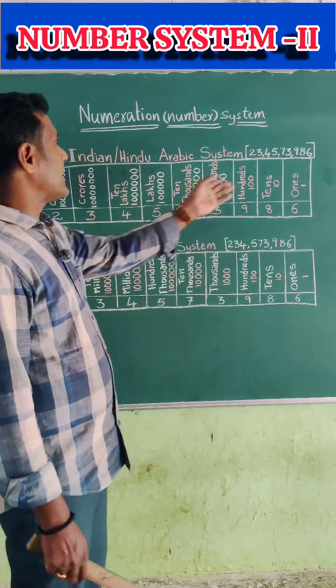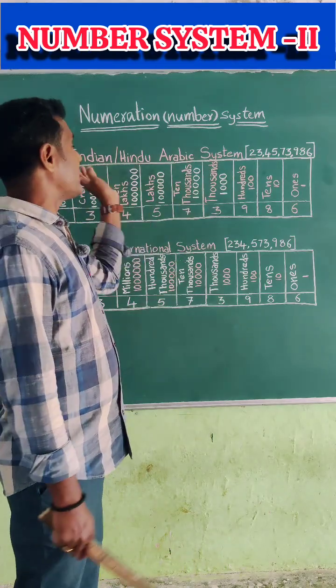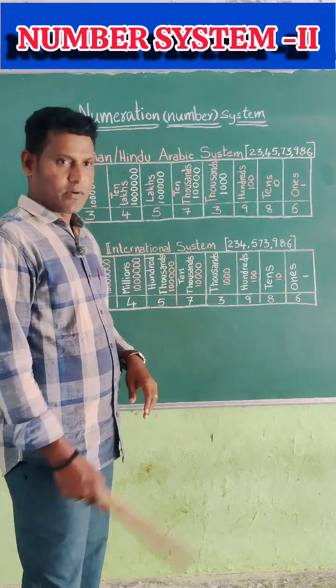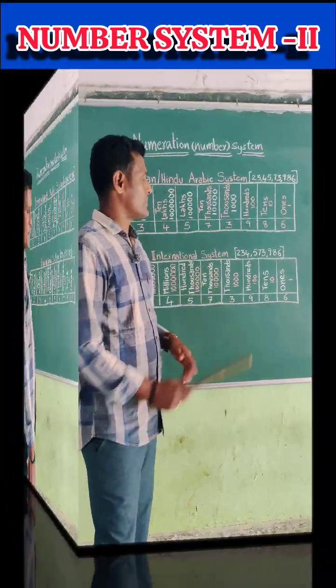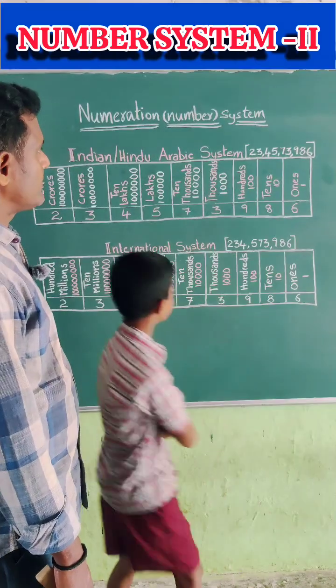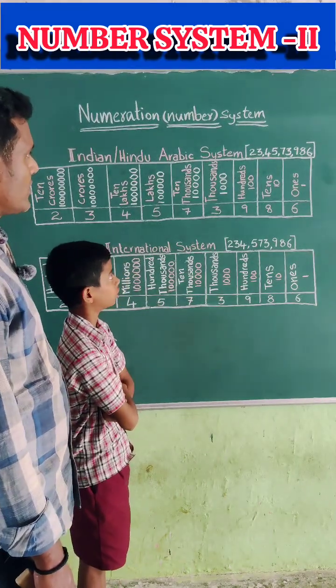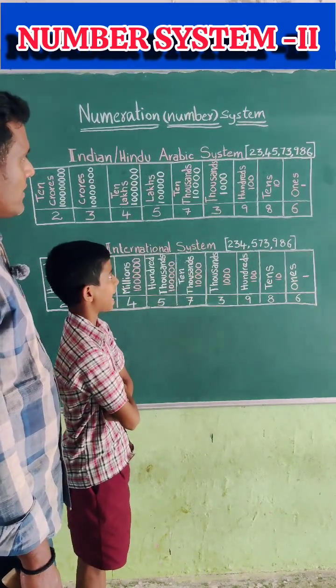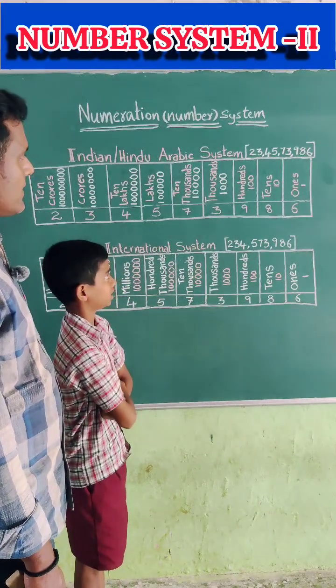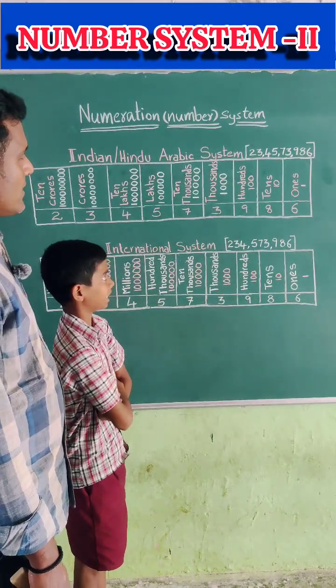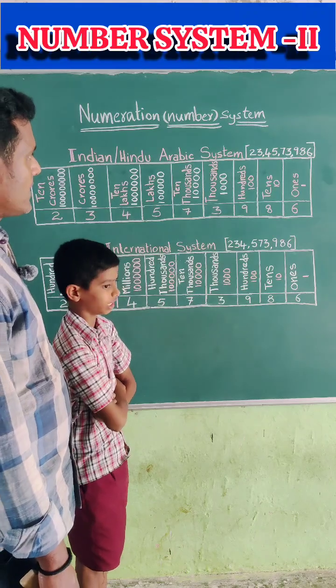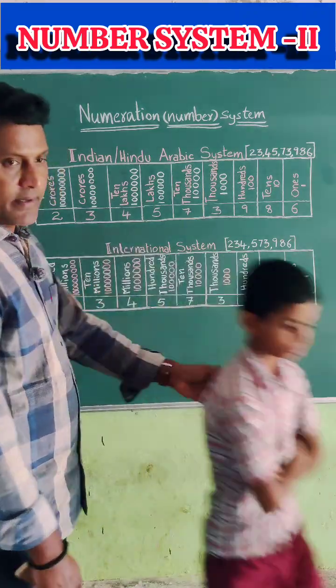Now, who will read this number according to the Hindu Arabic system? 23,45,573,986. Very good.